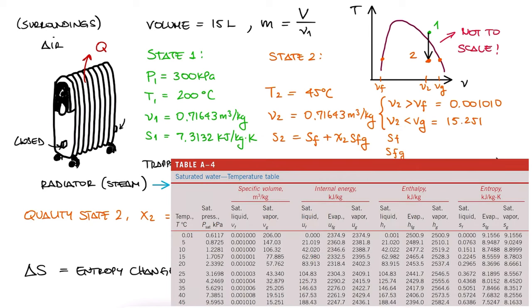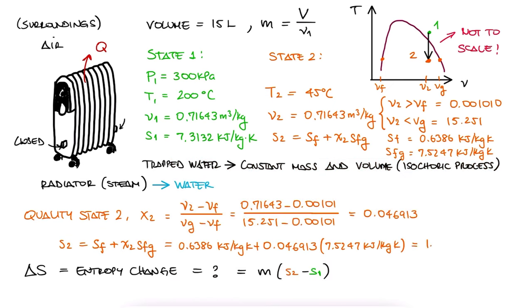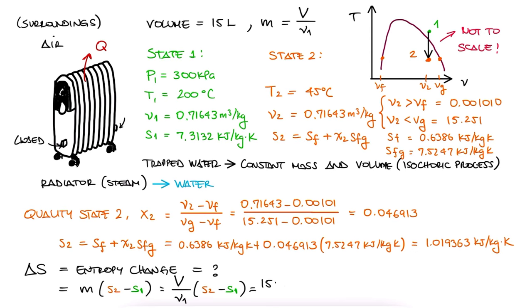We write down the values for SF and SFG, substitute the values, and we find that S2 is 1.019363. With this, we can substitute all values into our change of entropy expression and find that the total change in entropy is minus 0.13177 kJ per Kelvin.